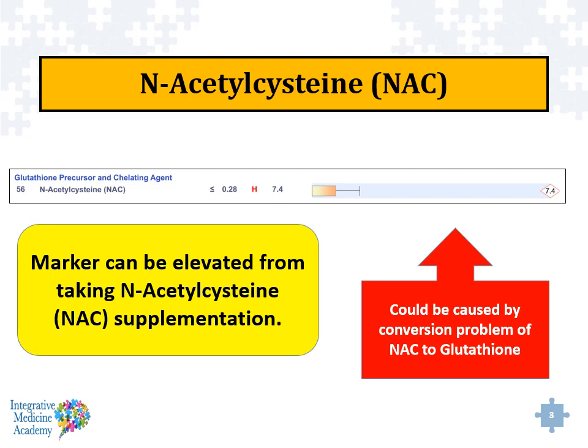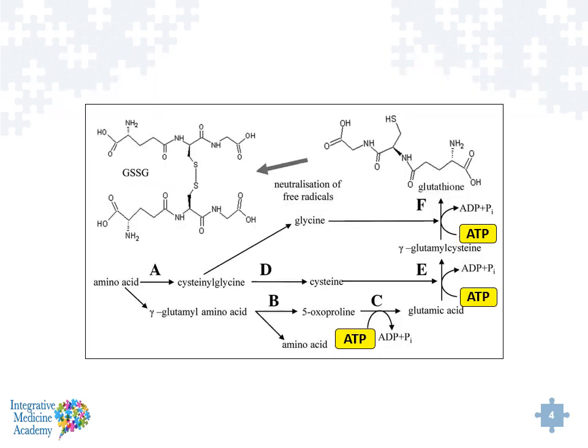It could also be caused by a conversion problem of NAC to glutathione. So if you see it elevated in somebody who isn't taking N-Acetyl Cysteine supplementation, you have to be concerned that they're not converting N-Acetyl Cysteine to glutathione. There are many factors that go into producing glutathione — the combination of glutamic acid, cysteine, and glycine. ATP, adenosine triphosphate, produced by the mitochondria, is necessary to make glutathione, and glutathione is the main antioxidant important for protecting the mitochondria. There are also enzymes in each step where genetic variants or polymorphisms may be affecting those enzymes.